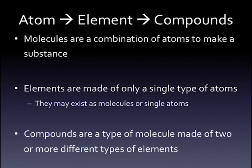Molecules are a combination of atoms to make a substance. Elements are made of only a single type of atom. They may exist as molecules or single atoms. For example: oxygen, hydrogen, gold.